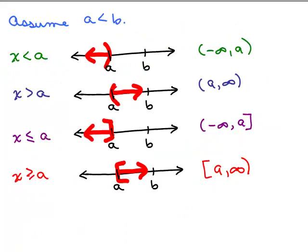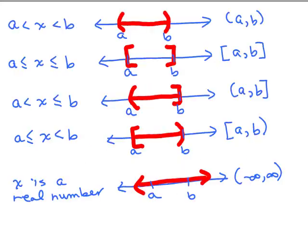In general, assuming a is less than b, here are the four inequality possibilities — x less than a, x greater than b, and so on — along with what the graph and interval notation look like for each. We also have the possibilities where x is sandwiched between two numbers, and that covers it in general.